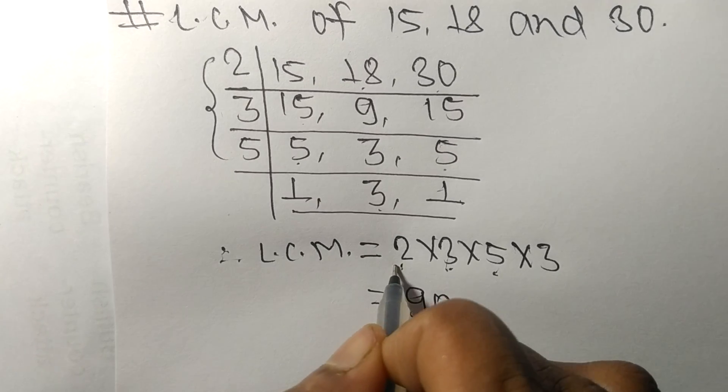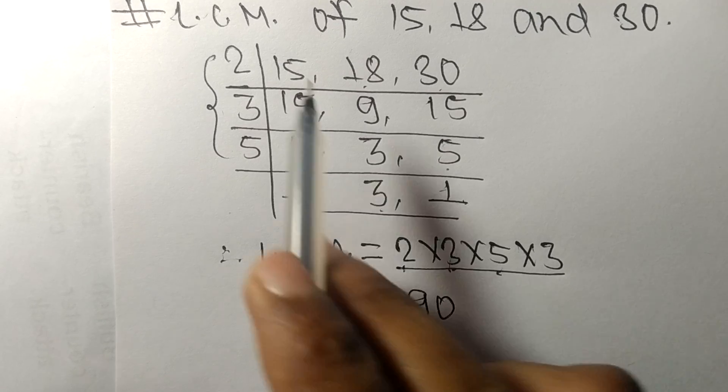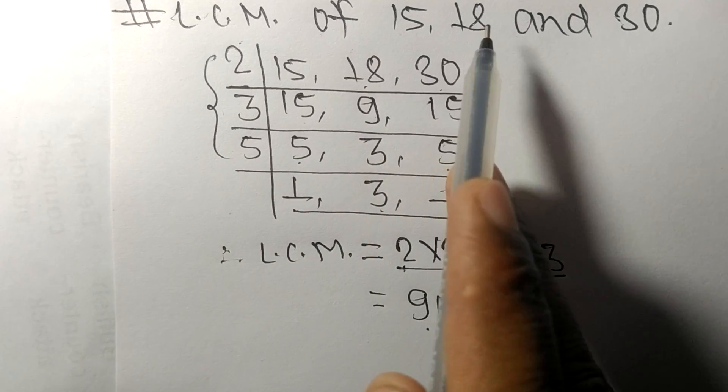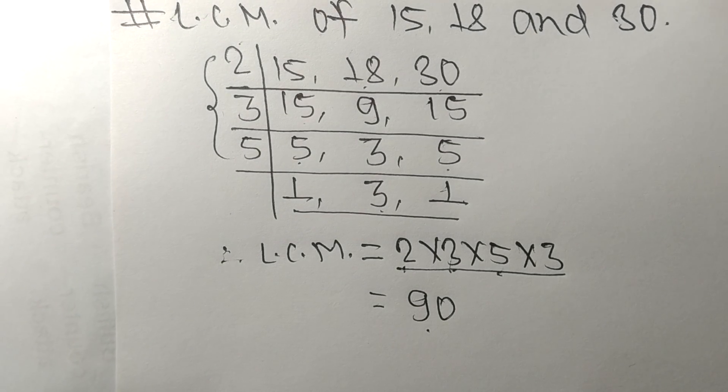By multiplying all these numbers we get 90. So 90 is the LCM of 15, 18, and 30. This is all for today. Thanks for watching!